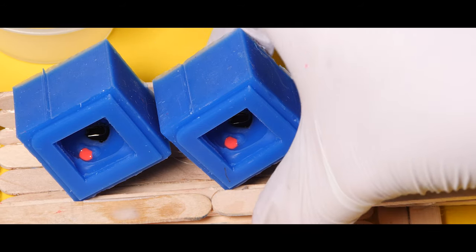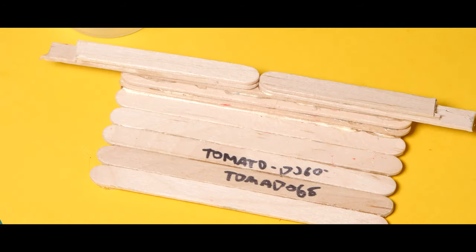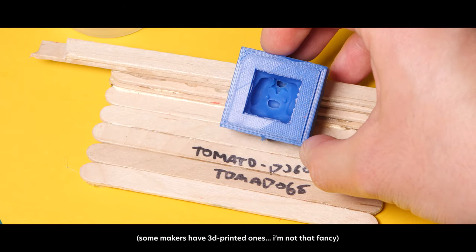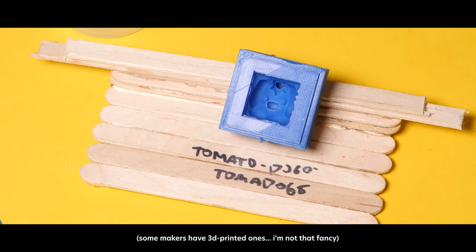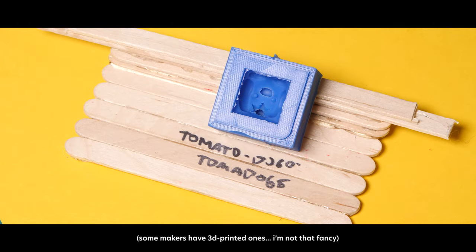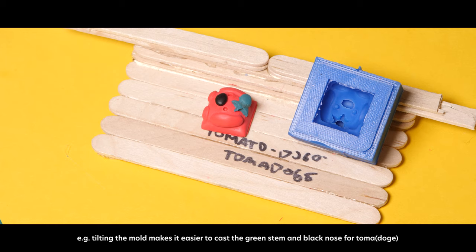You might be wondering what my molds are sitting on top of. They're just little risers I made out of popsicle sticks that allow my molds to sit at different angles. This makes it a lot easier to do multi-shot casting where a lot of the parts of the molds might be sitting in different areas of the sculpt.